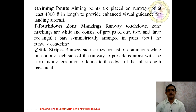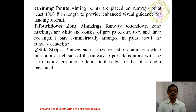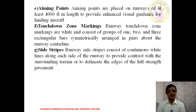Next is the aiming point. Aiming points are placed on runways of at least 4,000 feet in length to provide visual guidance for the landing of an aircraft. Next is the touchdown zone marking — runway touchdown zone markings are white in color and consist of groups of one, two, or three rectangular bars symmetrically arranged in pairs about the runway centerline. Next are side stripes — runway side stripes consist of a continuous white line along each side of the runway to provide contrast with the surrounding terrain.